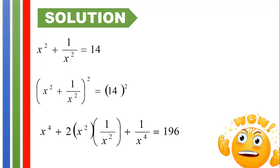And just like in the previous slide, twice of x squared times 1 over x squared becomes 2. Because x squared divided by x squared here will become 1, and 2 times 1 times 1 will just be 2. Hence, you will have x to the fourth plus 2, plus 1 over x to the fourth equals 196. And subtracting both sides by 2, we have x to the fourth plus 1 over x to the fourth equals 194. And that's the answer to our problem.